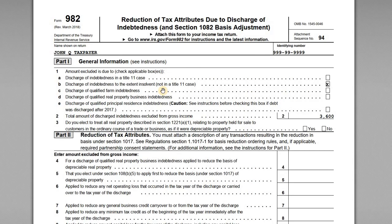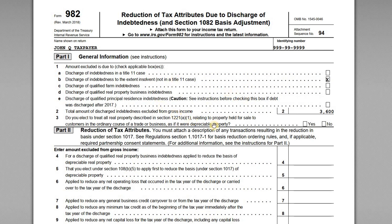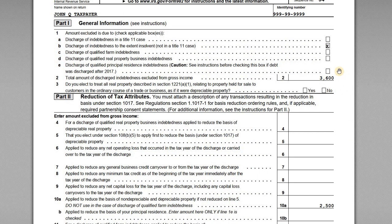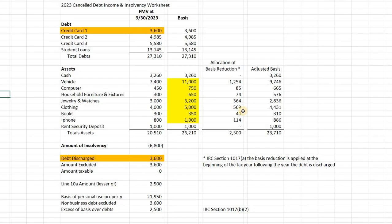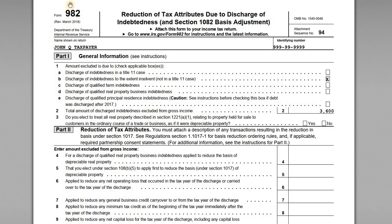On Form 982, you determine how you're going to exclude the debt in Part 1. In our case it's going to be line 1b — discharge of indebtedness because we're insolvent — so we check that box. Then on line 2 we enter the amount of debt we're going to be excluding from our income. The total on the 1099-C is $3,600 and we want to exclude the full $3,600, but we don't enter this amount until we complete the insolvency worksheet.